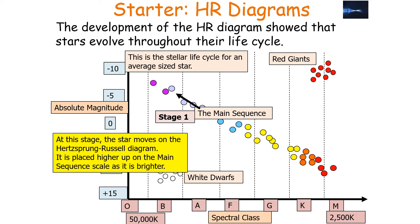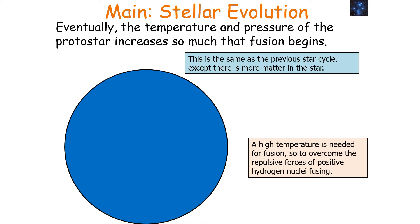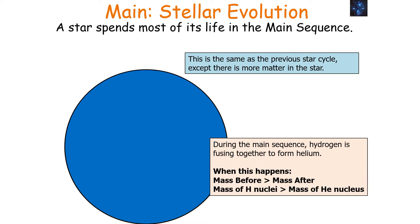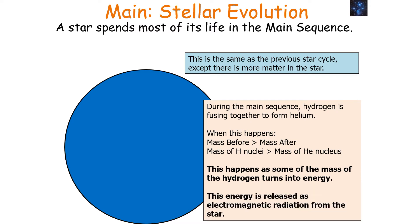When you get hydrogen fusion in the main sequence, it only happens in the core of the star, as this is the only place with a high enough temperature. A high temperature is needed for fusion to overcome the repulsive forces of the positive hydrogen nuclei fusing. During the main sequence, we know that the mass before fusion is greater than the mass afterwards. When you produce a helium nucleus from two hydrogen nuclei, you lose some mass because some of the hydrogen mass turns into energy.